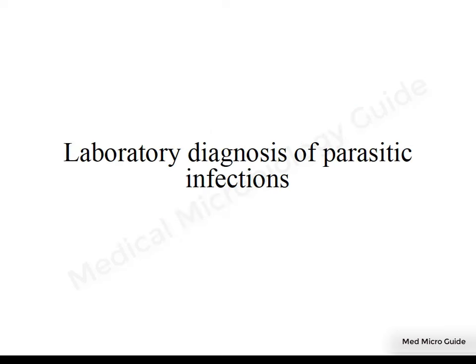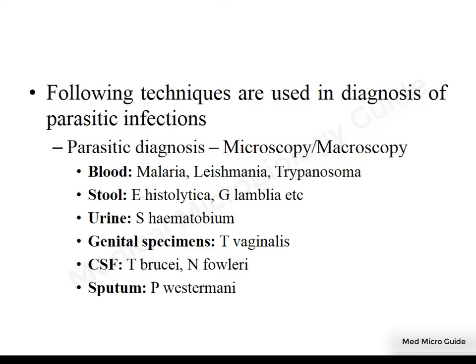A brief overview on the laboratory diagnosis of parasitic infections: parasitic diagnosis can be done by macroscopy and microscopy of various specimens. The specimen of choice depends upon the type of parasite suspected and the site of infection. For example, if there is suspicion of bloodstream infection by a parasite — usually malaria, Leishmania, Trypanosoma, or blood nematodes like Wuchereria bancrofti — these parasites will be in the blood, hence the specimen of choice should be blood for demonstration of the parasite.